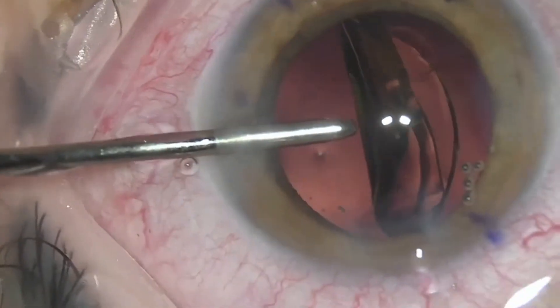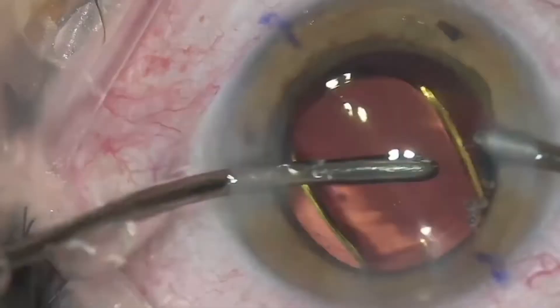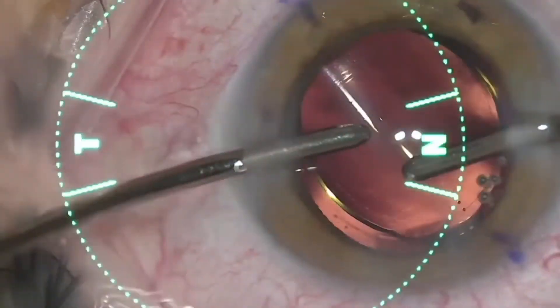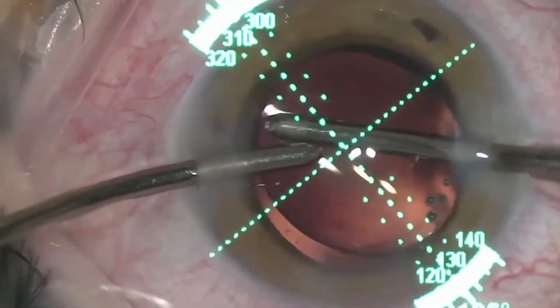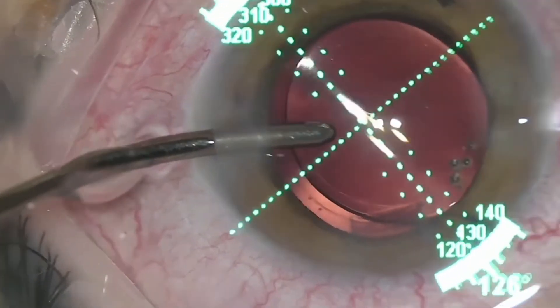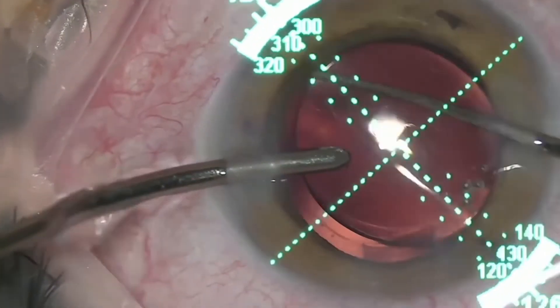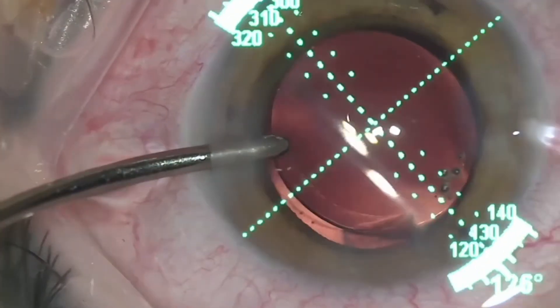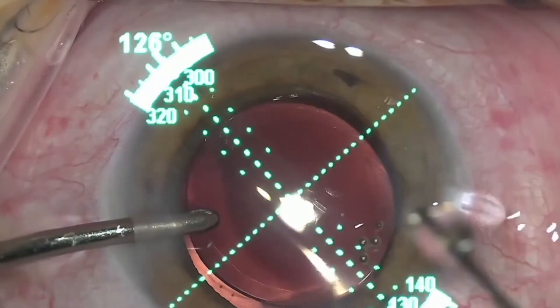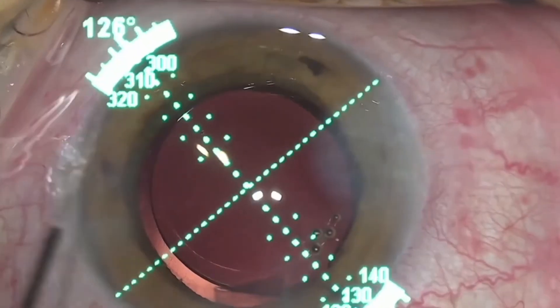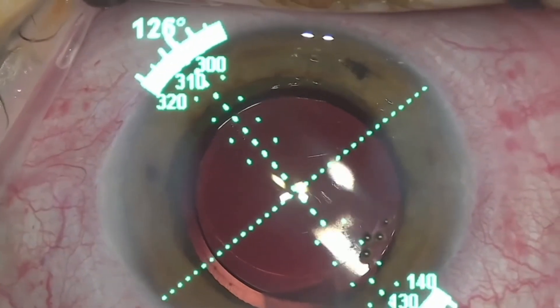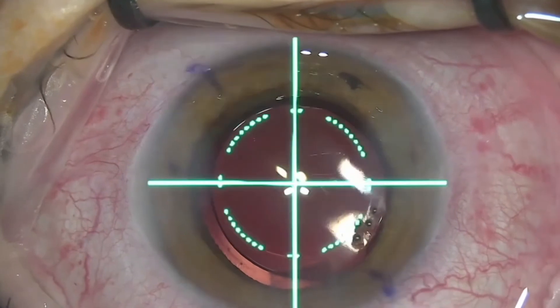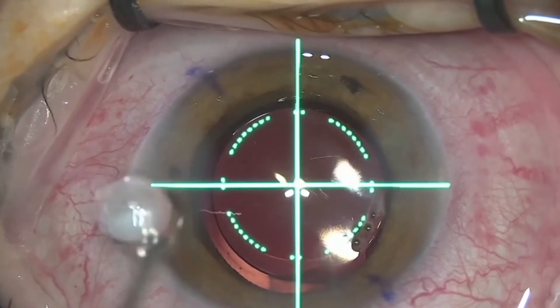As you can see, the preoperative axis was marked using our toric marker or the conventional toric marking. The IOL was placed in the bag using the Verion image-guided system. As shown here, 126 degrees is the desirable axis at which the IOL has to be placed. We then used an online paid software called Pixstar.